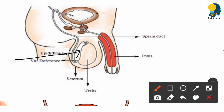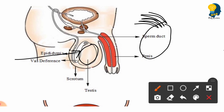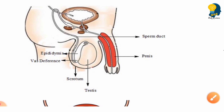The next part is the epididymis, which is a coiled tube-like structure. It is connected to the testis — you can observe a coiled-like structure attached to the testis. This coiled tube-like structure is called the epididymis.